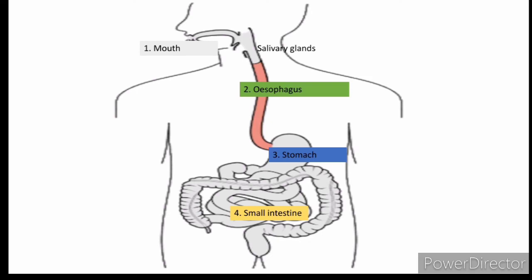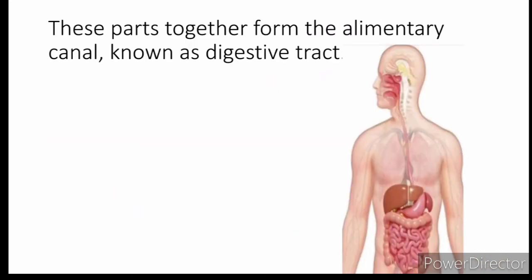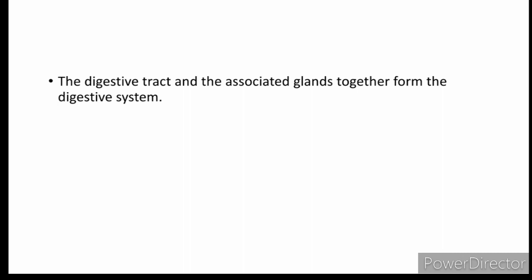The food then passes to the large intestine, which helps in absorbing the remaining nutrients, and the waste material is excreted out of the body. Digestion in humans can be divided into various compartments: the buccal cavity, esophagus, stomach, small intestine, large intestine, and anus. These parts together form the alimentary canal, known as the digestive tract. The digestive tract and associated glands together form the digestive system.